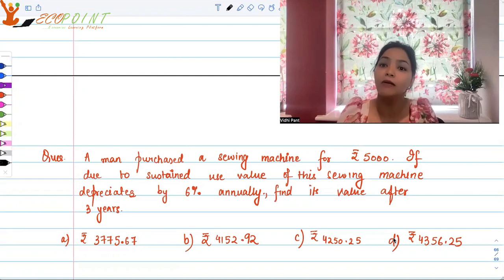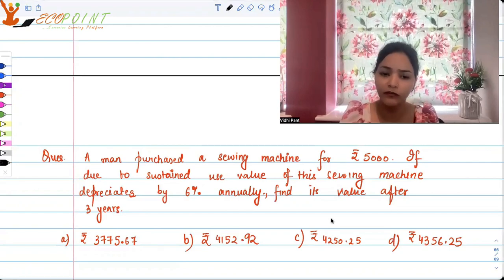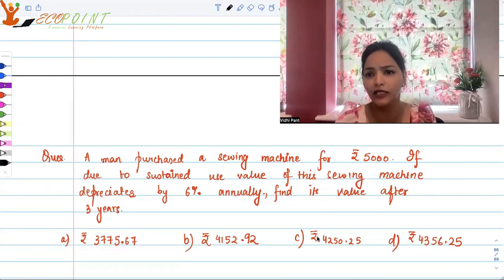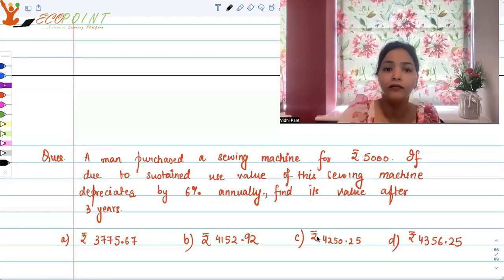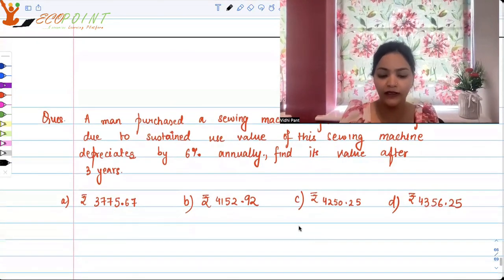So clearly, the process will go like compound. That's why this is essentially a compound interest question. But things are not adding up. It's depreciating. So how to go about this question? Just like we appreciate, here it will depreciate. So subtract ho ga. But the method will be similar.